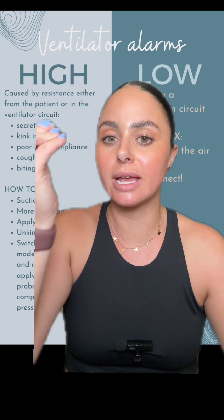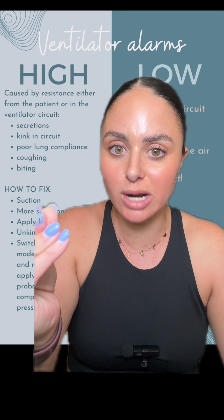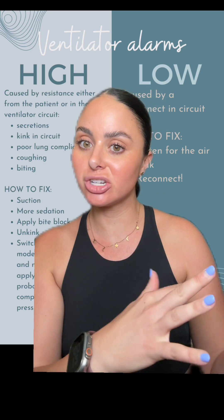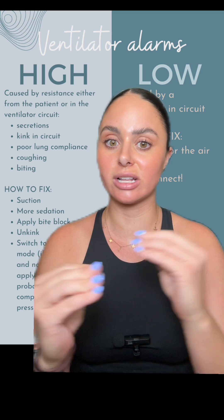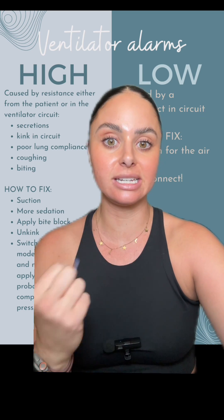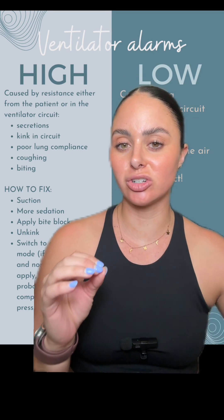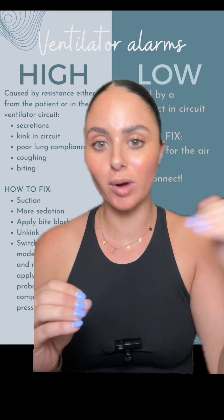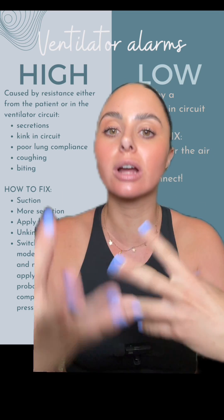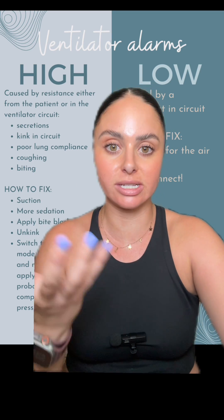For your high pressure alarms, these alarms will say something like high pressure, peak airway pressure, or maximum pressure. These types of alarms are caused by resistance either from the patient or somewhere in the ventilator circuit — whether that's the ventilator tubing or the patient's ET tube. Anything that causes the ventilator to push more pressure into the circuit to overcome resistance is going to trigger these alarms.